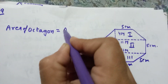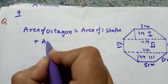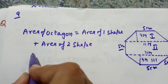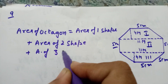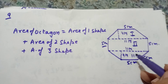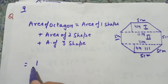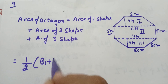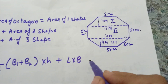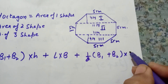Area of octagon equals area of first shape plus area of second shape plus area of third shape. The first and third shapes are identical trapeziums, and the second is a rectangle. The area formula will be: half into (b1 plus b2) into h, plus length into breadth for the rectangle, plus half into (b1 plus b2) into h for the third trapezium.